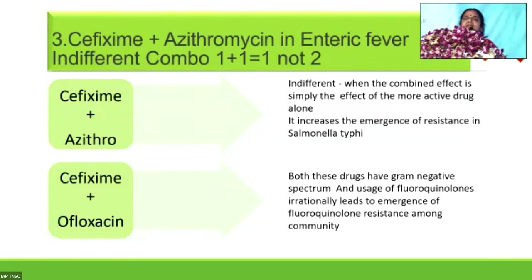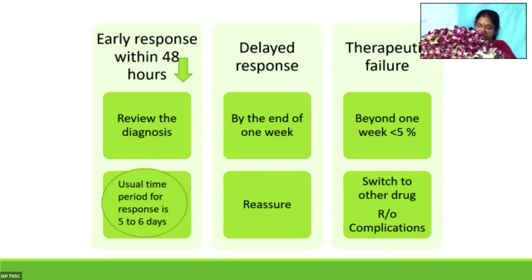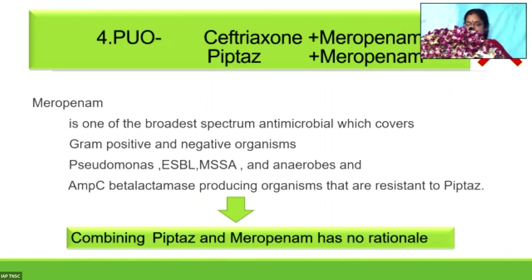There is no point in adding ofloxacin — 75% of cases are ofloxacin-resistant. Cefixime alone is sufficient. Regarding enteric fever: whenever you get an early response within 48 hours with ceftriaxone, please review the diagnosis — it may not be enteric fever at all, since the usual response time is 5 to 6 days. Be patient; delayed response is known to occur. By the end of 1 week, most fever comes down with ceftriaxone in enteric fever. If the child is well, reassure the patient. We call it therapeutic failure only when fever persists beyond 1 week — which occurs in less than 5% of children — when you then switch to azithromycin.